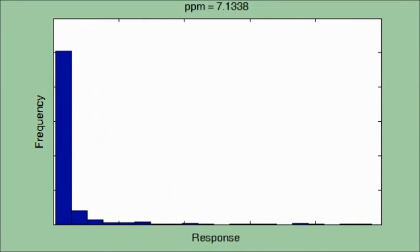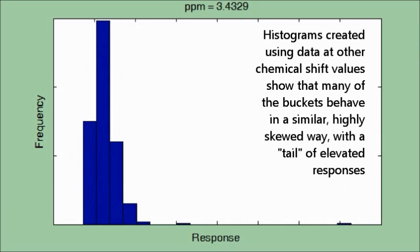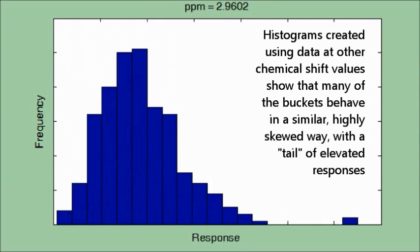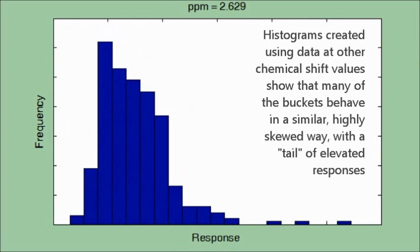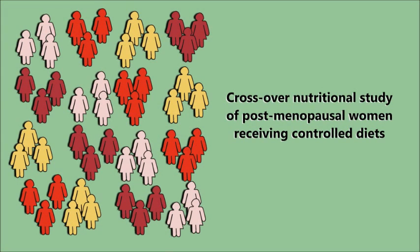Examination of other buckets in the dataset shows that many are highly skewed, with tails of values indicating elevated levels of the corresponding metabolite. On examination of our other spectral collections from human urines, we have found that all exhibit this same skewed behaviour for a large proportion of the buckets.